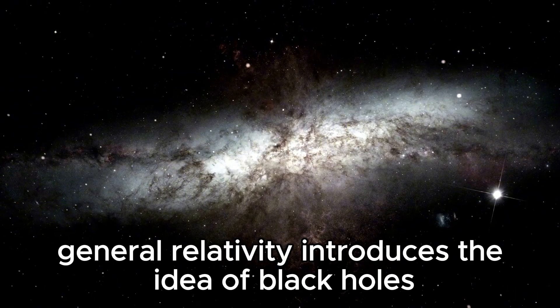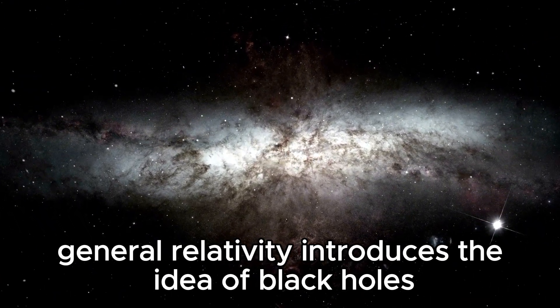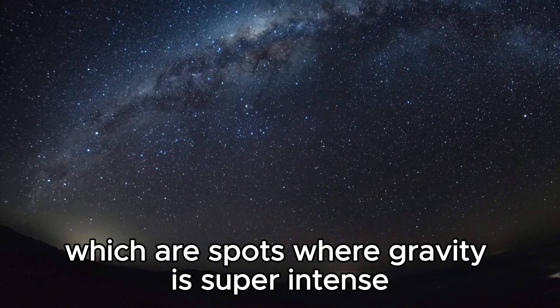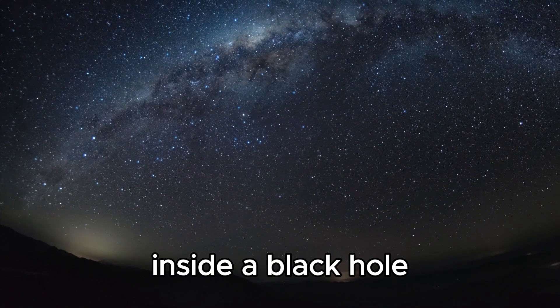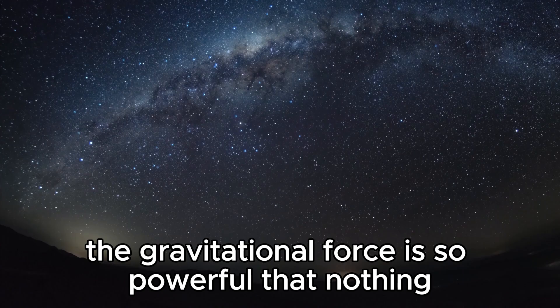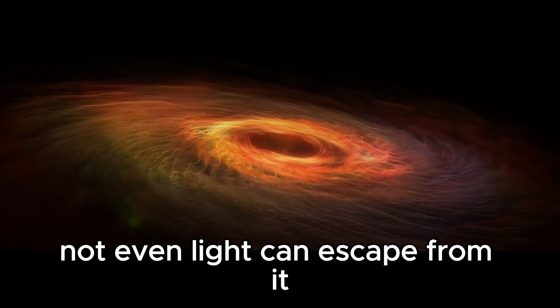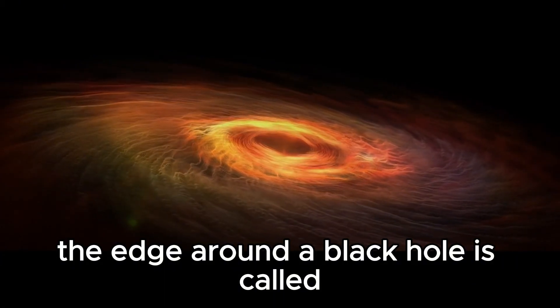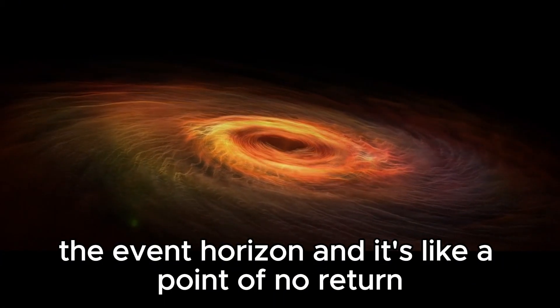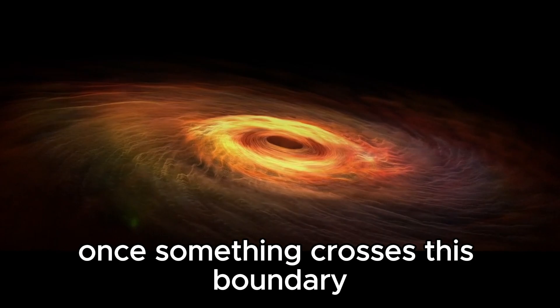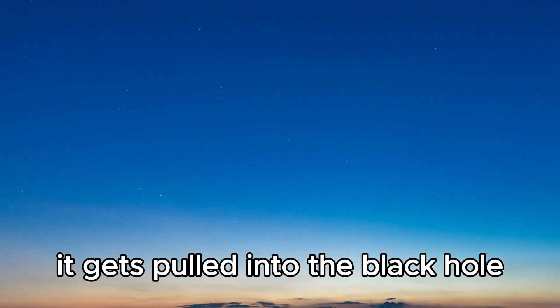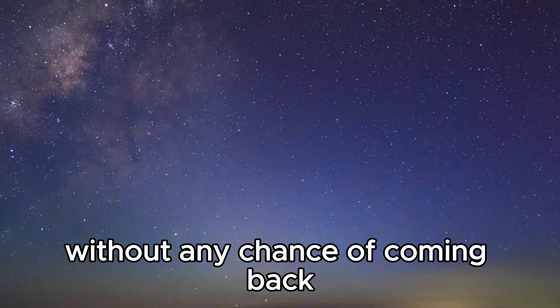General relativity introduces the idea of black holes, which are spots where gravity is super intense. Inside a black hole, the gravitational force is so powerful that nothing, not even light, can escape from it. The edge around a black hole is called the event horizon, and it's like a point of no return. Once something crosses this boundary, it gets pulled into the black hole without any chance of coming back.